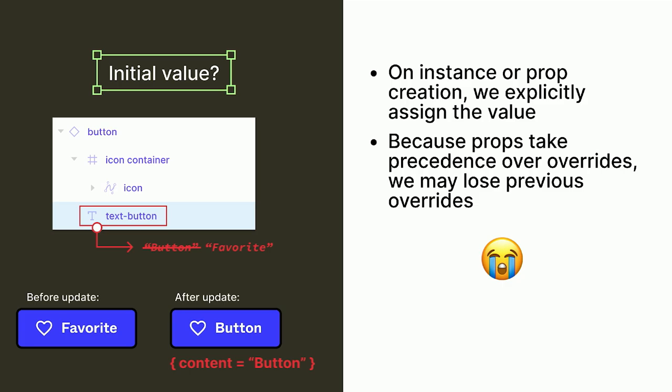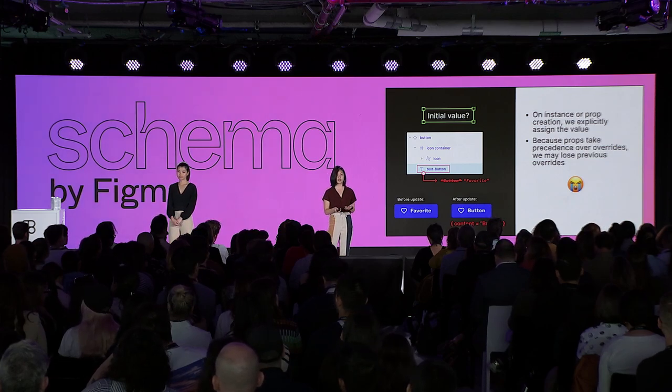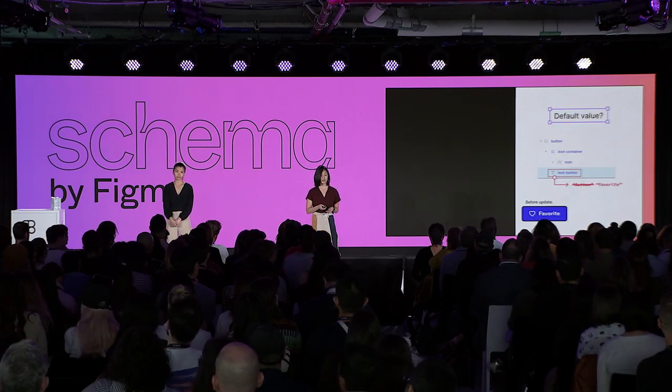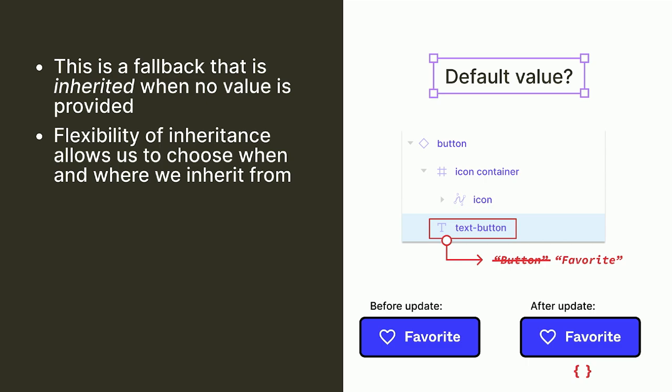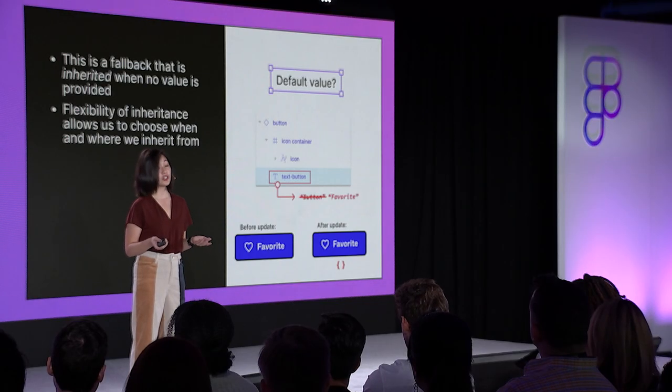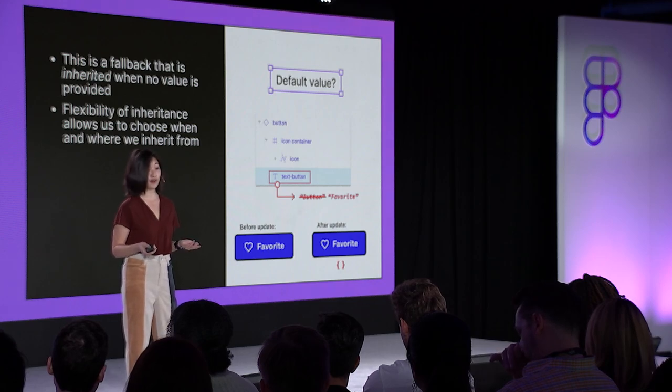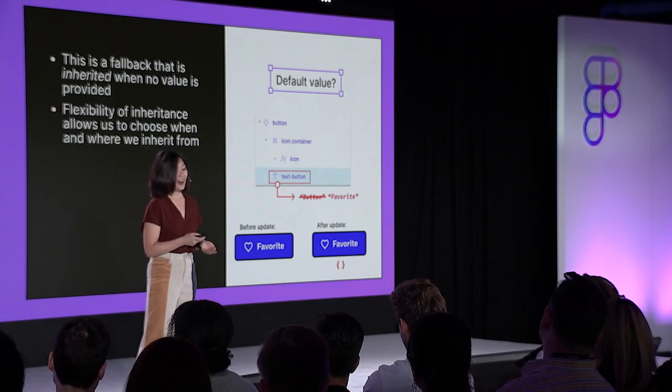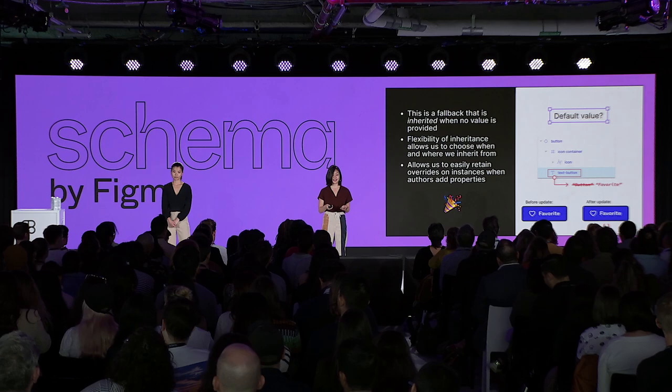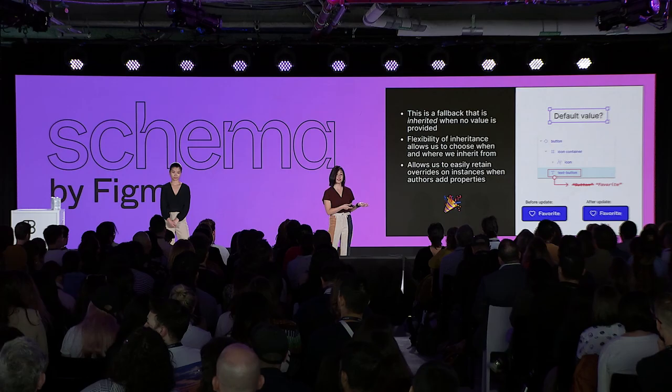Instead, we looked at the default value approach. Before the update, the button still says 'favorite'. Because the value is a fallback, when we update we have an empty map of properties, and the flexibility of the inheritance model lets us choose to inherit from the overrides rather than from property assignments. This allows us to easily retain overrides on instances when authors add properties — so when converting from instances without props to instances with props, we're able to retain that text property. This was just one of the edge cases we had to walk through to ensure a seamless design systems upgrade experience.